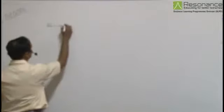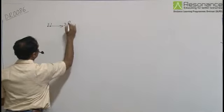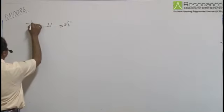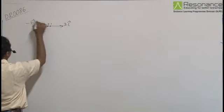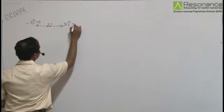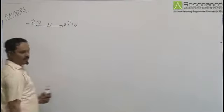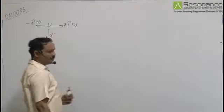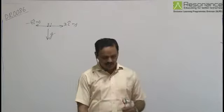One is projected horizontally with 3 i cap speed. Another is projected with speed minus 4 i cap meter per second. They are falling under gravity acting in vertically downward direction.